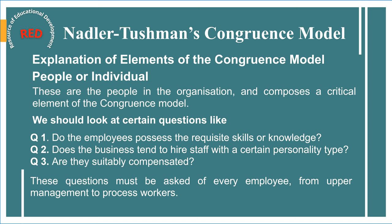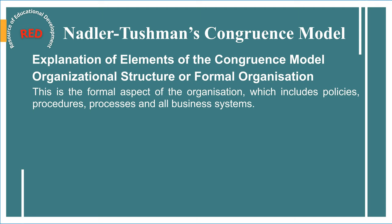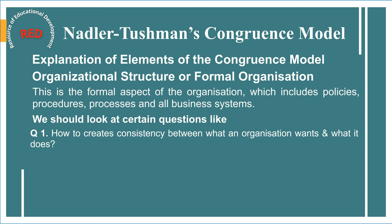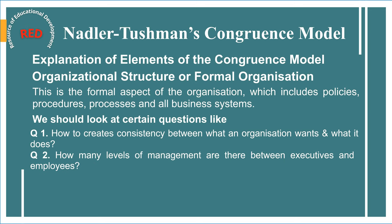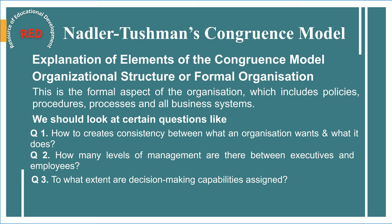The third element is organizational structure or formal organization. This is the formal aspect of the organization, which includes policies, procedures, processes, and all business systems. Key questions include: How do you create consistency between what an organization wants and what it does? How many levels of management are there between executives and employees? To what extent are decision-making capabilities assigned? How many business units are there — are divisions product, region, or function-based? Are they centrally located or do they occupy several locations?